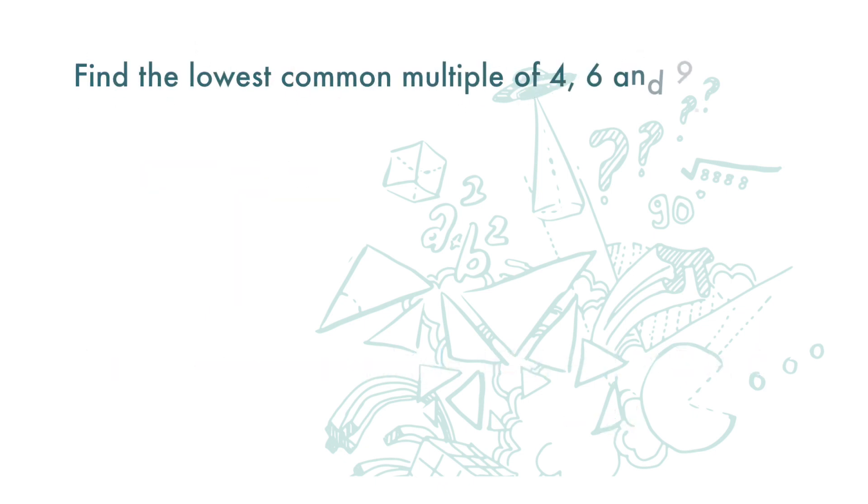One more question: find the lowest common multiple (LCM) of 4, 6, and 9. We are going to use the repeated division method. There is no number where all three can be divided by, but as long as at least two of the numbers can be divided by a common number, we will proceed.